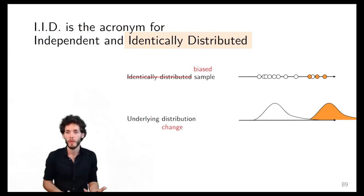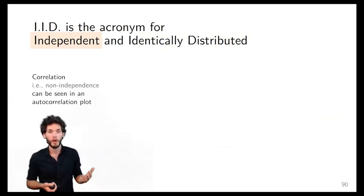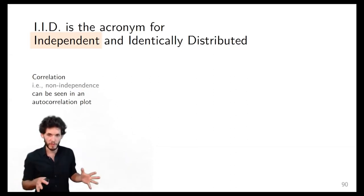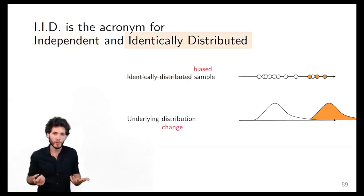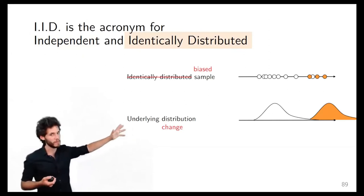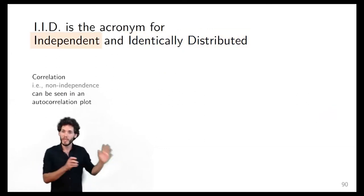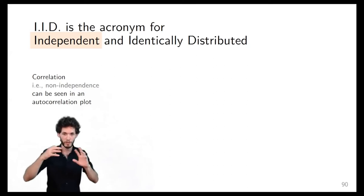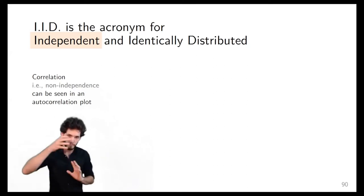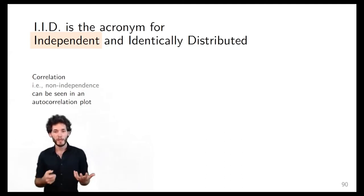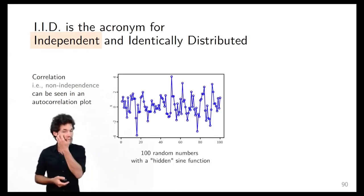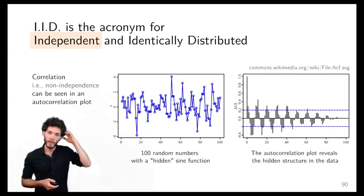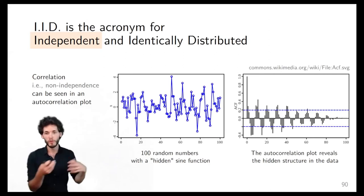IID is the combination of both independence and identical distribution. Now, how can we detect violations practically? For independence — the memoryless property — you can look for traces of correlation using an autocorrelation plot. This is a classic example: random numbers added to a sine function. If you compute the autocorrelation function of that data, you get a plot where the bars show the amount of correlation between successive samples separated by different numbers of steps. A large peak at lag 10, for instance, means samples 10 steps apart are highly correlated — they tend to be high and low at the same time — revealing an underlying periodicity.